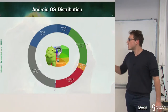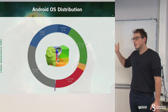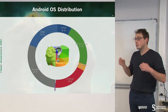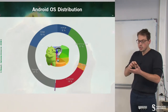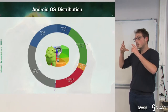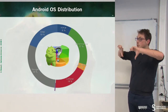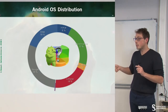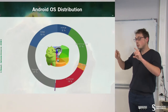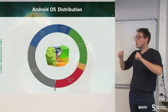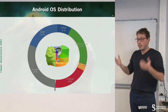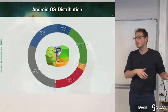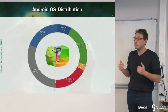Why does this fragmentation exist where iOS succeeds in managing versions? The problem is that each company can define its own layout for the GUI. When a new Android version is released, the company has to update its version. But since the company wants to sell phones, it prefers to focus effort on new phones rather than supporting old ones. This is the main problem of Android.